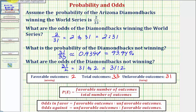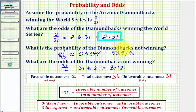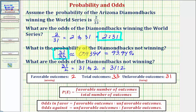For the homework: for the first question on odds in favor, enter the answer using colon notation. For the probability question, we want to be exact, so enter the fractional probability rather than the approximate decimal or percentage. For the last question on odds against, again use the colon to express the odds. I hope you found this helpful.